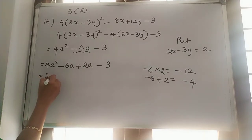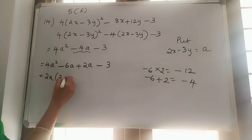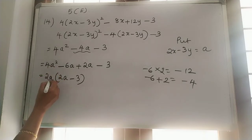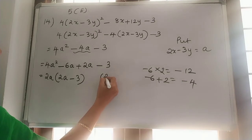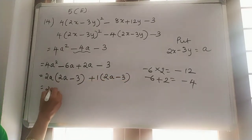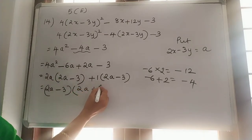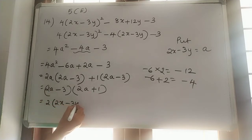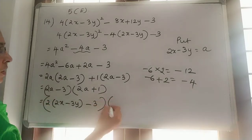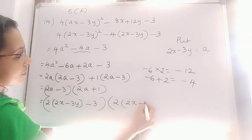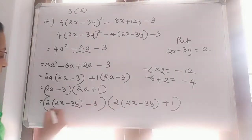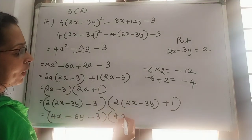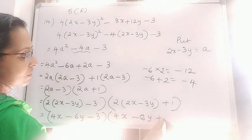So we can split this negative 4a as 4a square minus 6a plus 2a minus 3. We can write 2a common, giving 2a minus 3. Then it will be 2a plus 1. So 2a minus 3 common, balance is 2a plus 1. Replace a as 2x minus 3y. So 2 into (2x minus 3y) minus 3, and 2 into (2x minus 3y) plus 1. Expanding: 4x minus 6y minus 3 into 4x minus 6y plus 1. So that is the final answer.